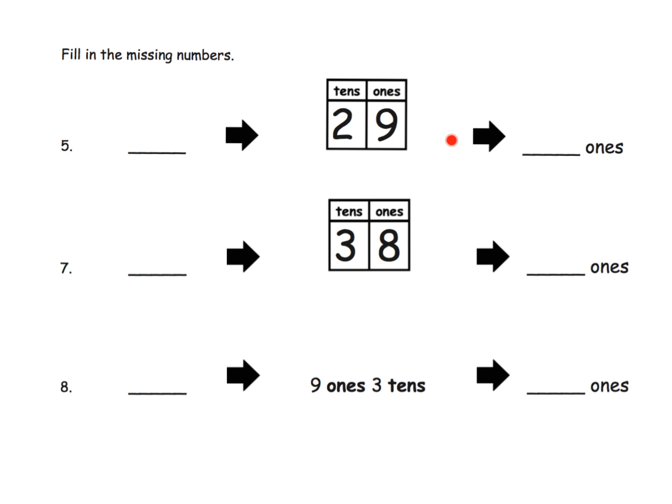Now here we're just kind of connecting all of these different representations. So when I see two tens and nine ones, I'm supposed to know that that's 29 ones. I'm also supposed to know that way over here I could just write the number 29. So we've got 29 is two tens and nine ones, which is 29 ones. Another way we could think of this is three tens and eight ones, so that's 38 ones, and we could think of this as 38.